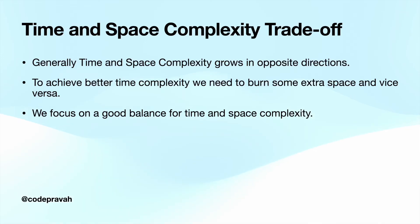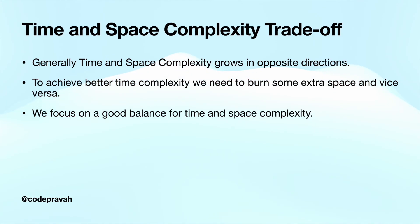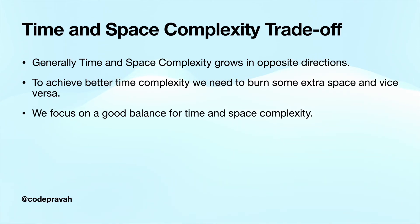Our last topic is the time and space complexity trade-off. Generally, time complexity and space complexity grow in opposite directions. If we want a good time complexity, we have to use some extra space. If storage is growing too high, we have to compromise on time complexity. Both are inversely proportional — wherever you need better time complexity you need to burn some extra space, and if you want to save memory you face higher time. In the real world we always focus on a good balance between time and space complexity.